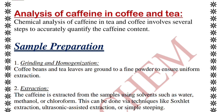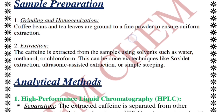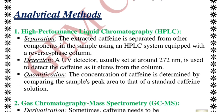For analysis of caffeine in coffee and tea, we are going to see the sample preparation where we need to grind and homogenize the mixture. We are going to extract the sample using different kinds of solvents — water, methanol, and chloroform. After that we have different analytical techniques.